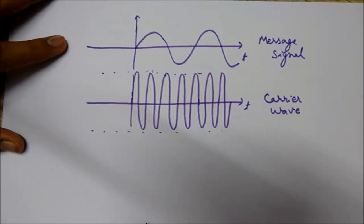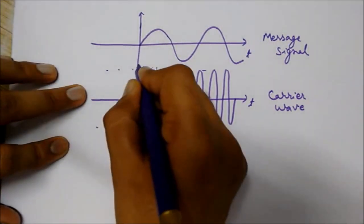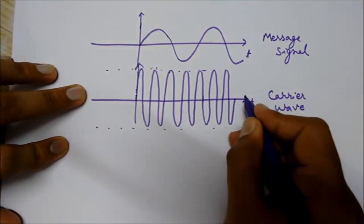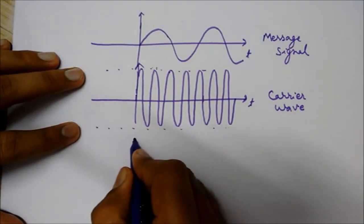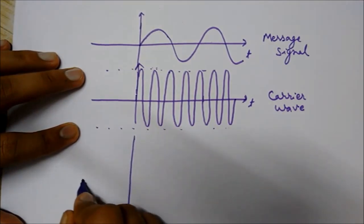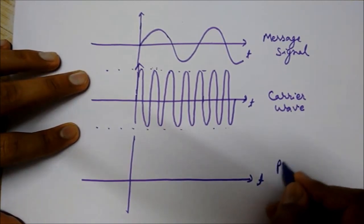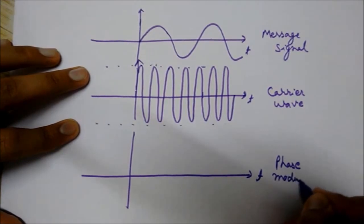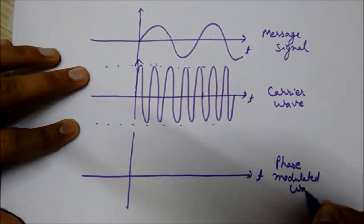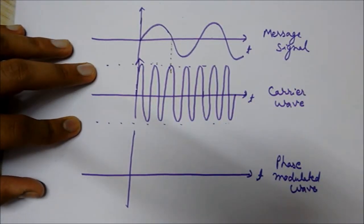So now I am drawing the phase modulated wave. Only the phase of the carrier will be varied here. Not the frequency, neither the amplitude, only the phase. The information will be contained in the phase changes. So the phase modulated wave, I am going to draw. So let's observe it. These are the times when the message signal cuts the time axis.